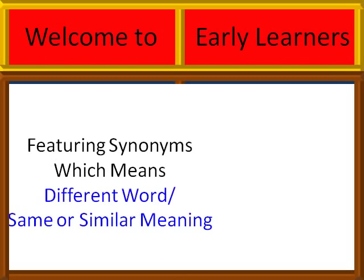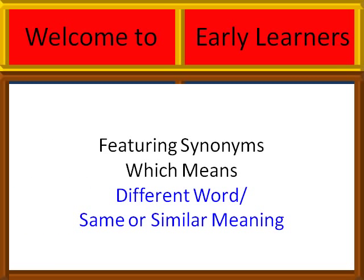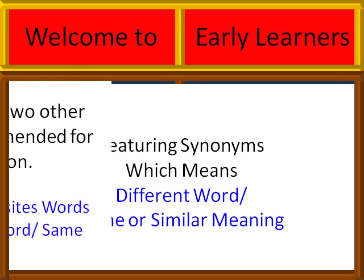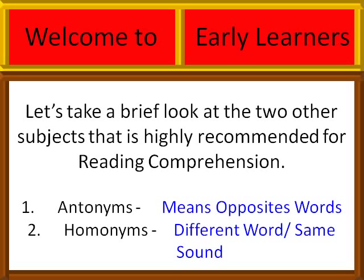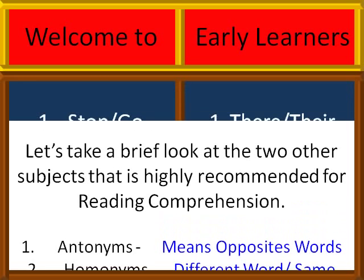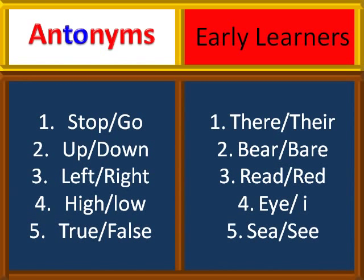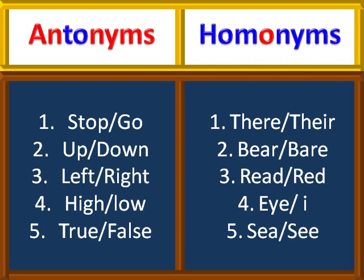Welcome to Early Learns, featuring synonyms — which means different word, same or similar meaning. Let's take a brief look at two other subjects highly recommended for reading comprehension: antonyms, meaning opposite words; and homophones, meaning different word, same sound. Examples of antonyms: stop is the opposite of go, up is the opposite of down, left is the opposite of right, high is the opposite of low, true is the opposite of false. Examples of homophones: there/there, bear/bear, red/read, I/eye, see/sea.